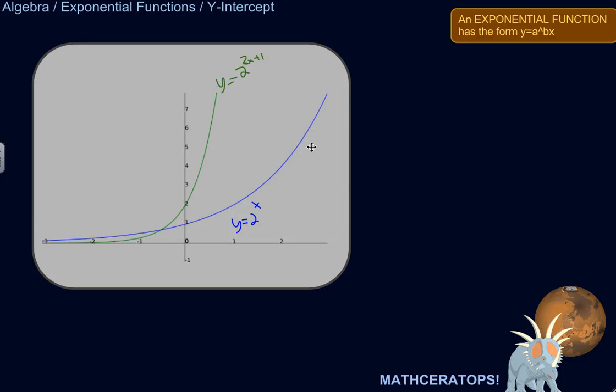Finding the y-intercept of an exponential function is not so mysterious. The y-intercept of an exponential function is just like the y-intercept of any function, even a linear function. The y-intercept is where it crosses the y-axis.